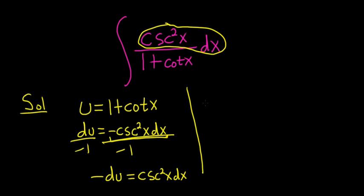So we have, this becomes negative du all over u, right? Because this piece here is simply negative du. And so now we can integrate.